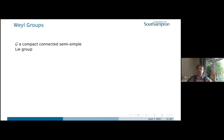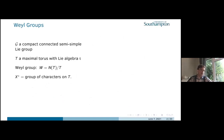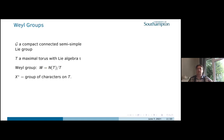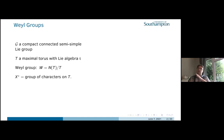Let me say a little about Weyl groups. The context is compact, connected, semi-simple Lie groups — ones which have a real Lie algebra. If I take the maximal torus in the Lie group, we have a torus appearing as before, and the Lie algebra is R^n over that torus. The Weyl group can be thought of as generated by reflections, or defined as the normalizer of the torus modulo the torus itself — a finite group that acts on the torus, and by differentiating, on the Lie algebra as well.